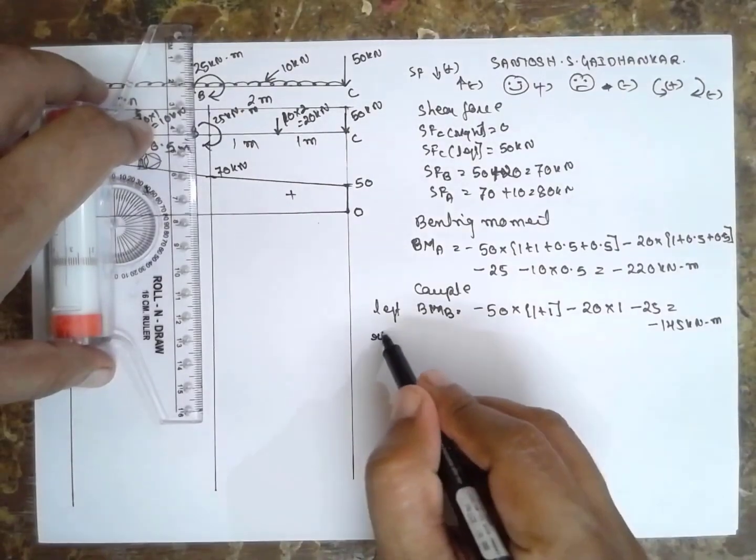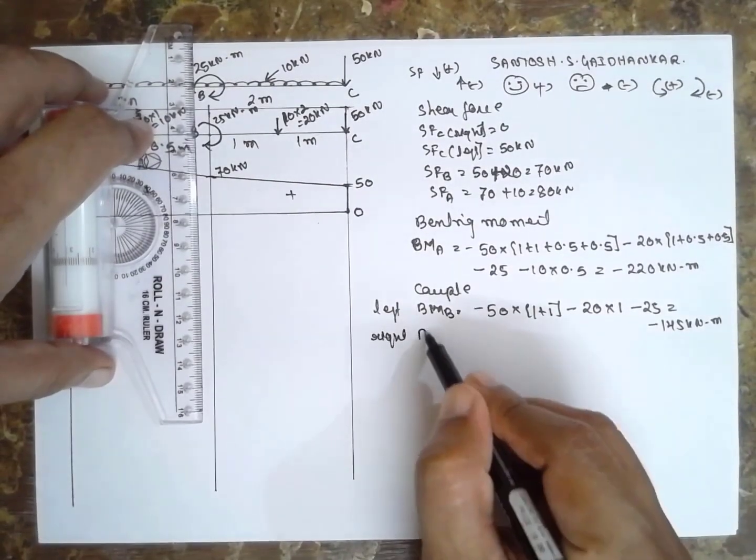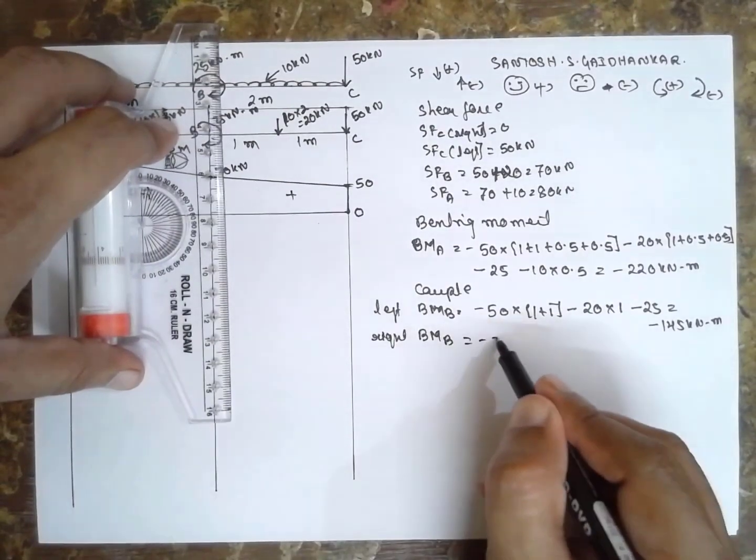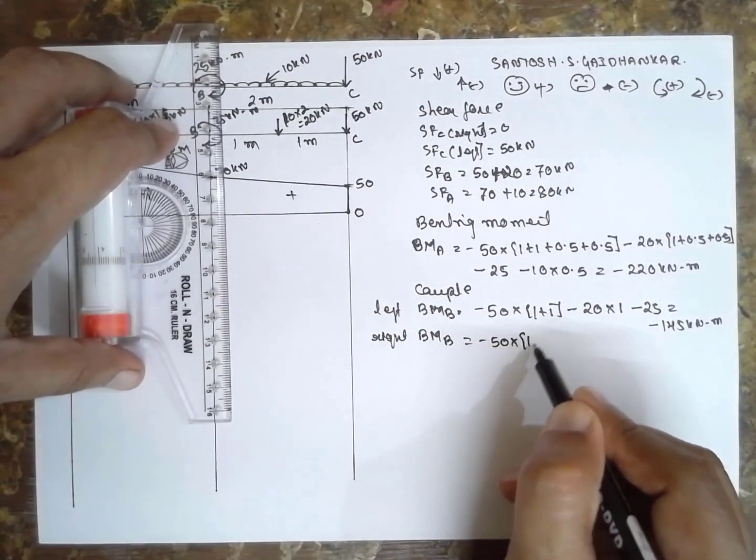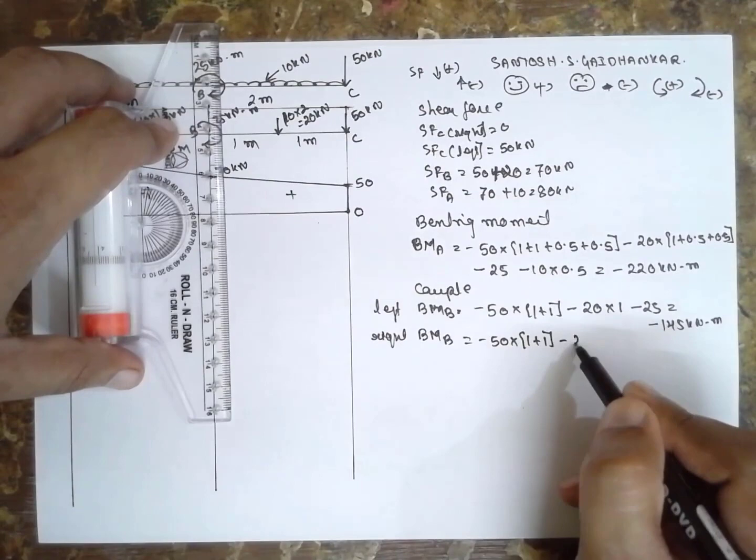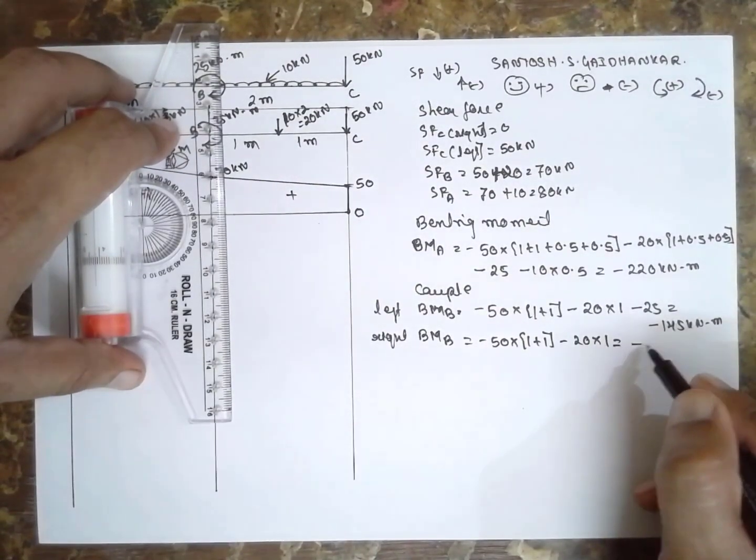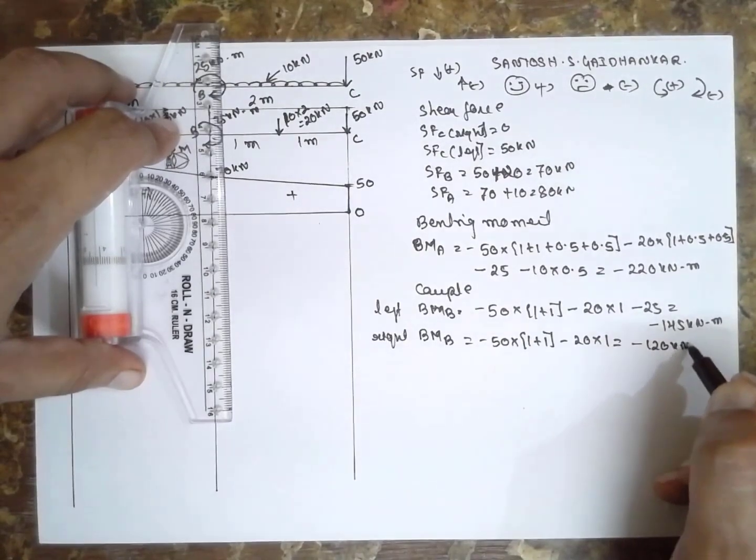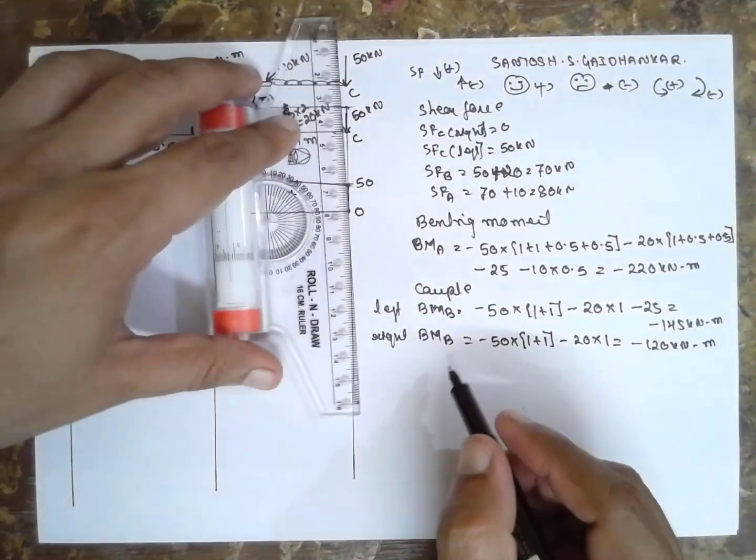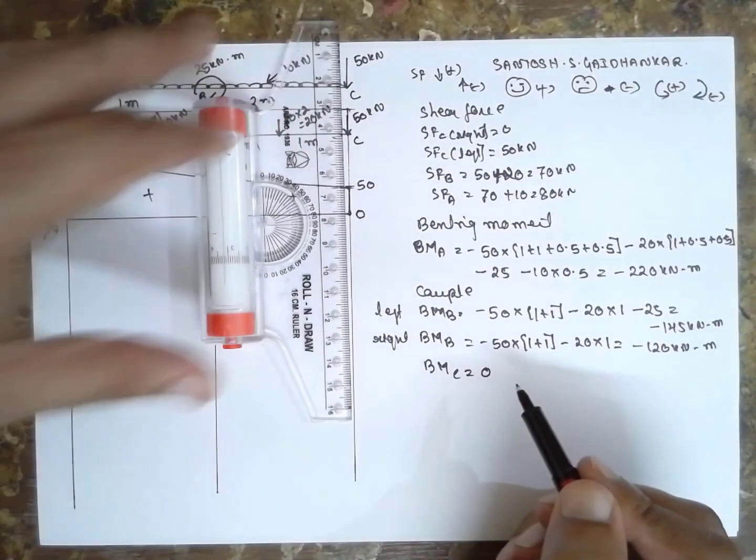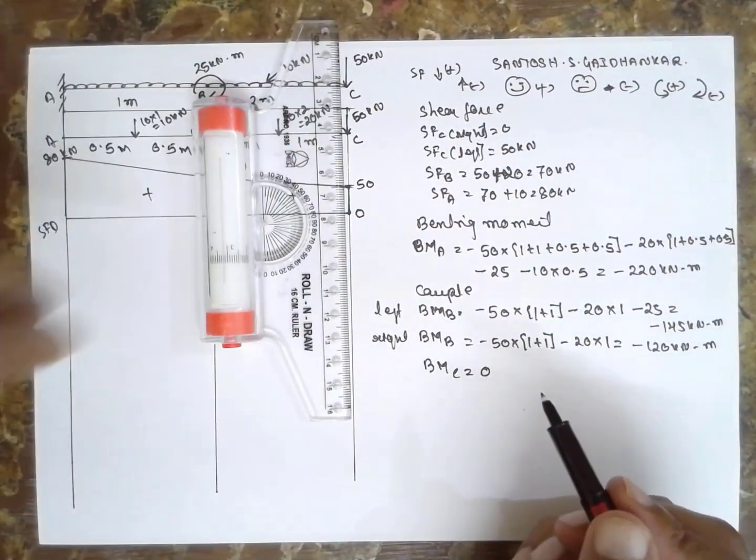BM at B right: minus 50 into 2 (1 + 1), minus 20 into 1. Answer is minus 120 kN·m. And BM at C is 0.